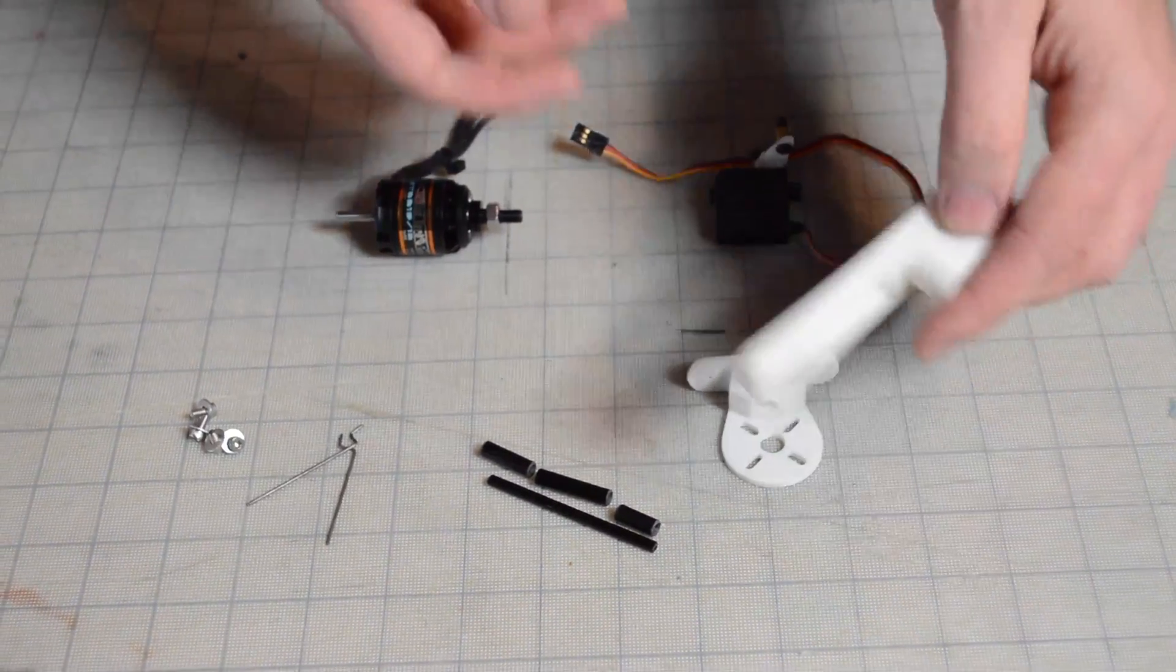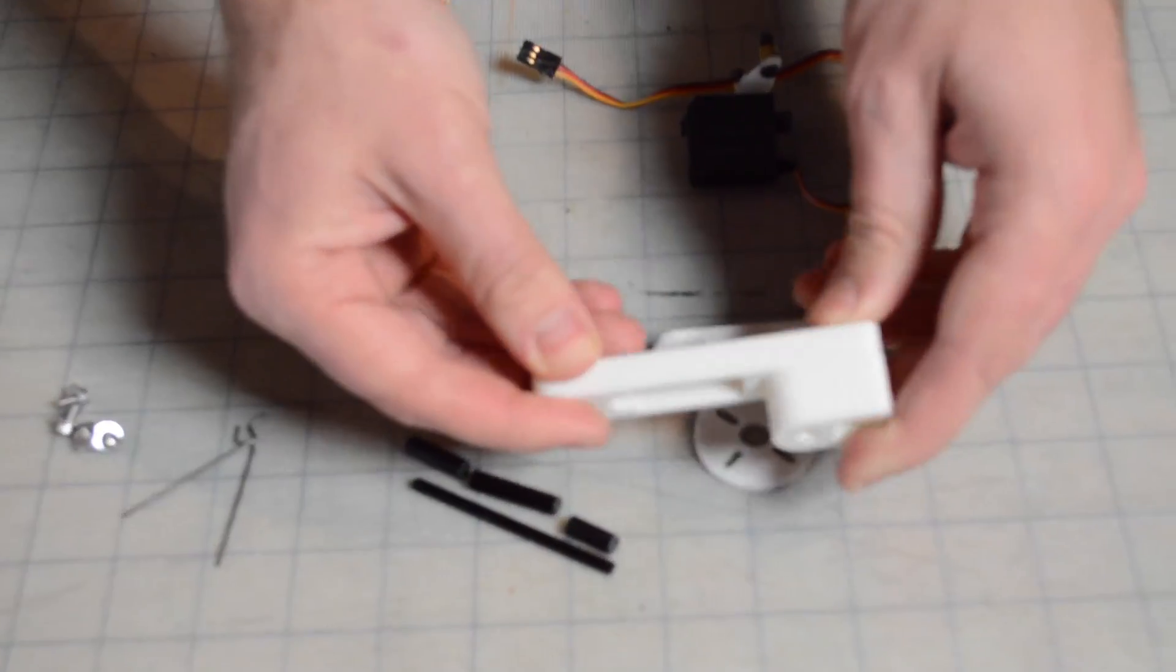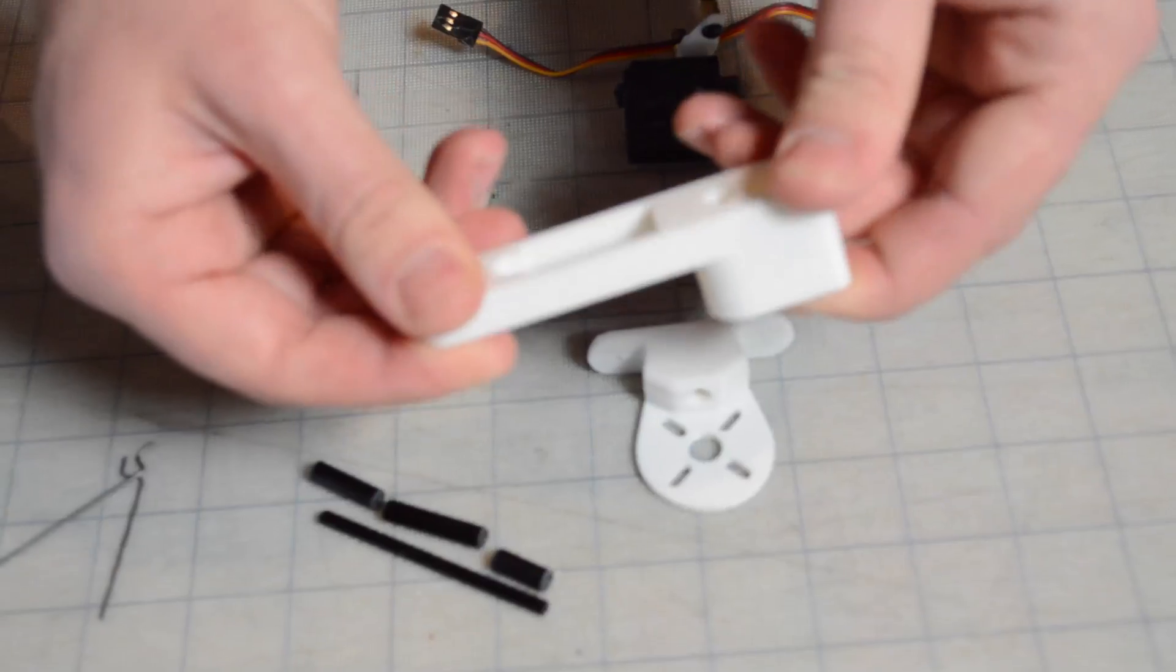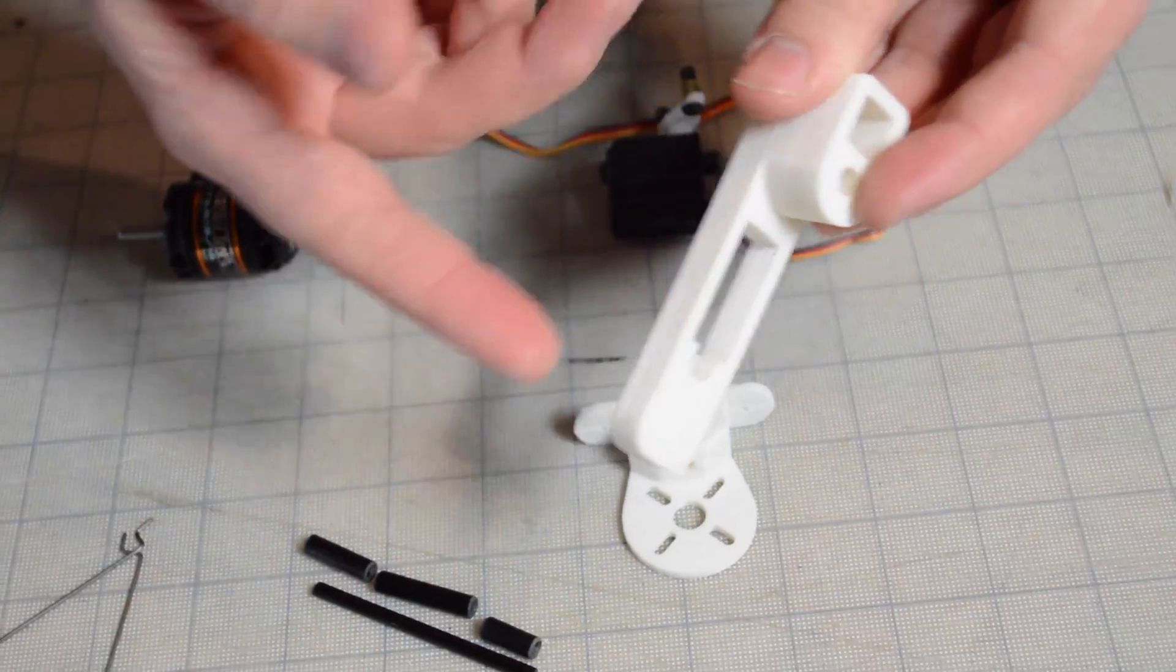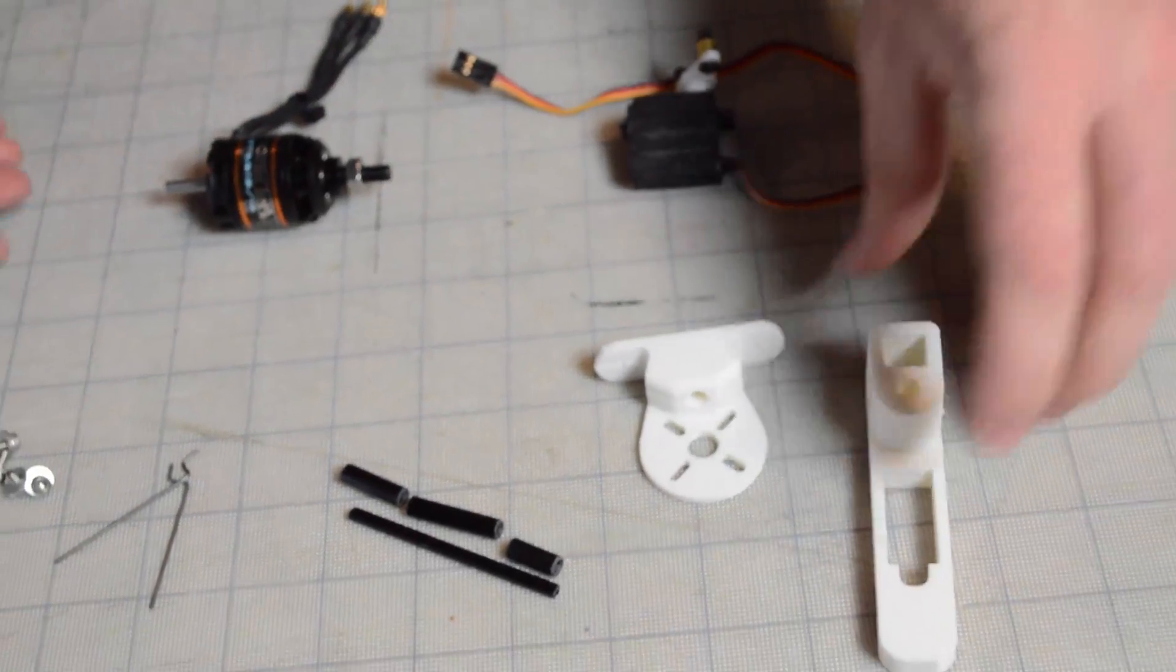Okay, so this video is just to show you how to assemble the 3D printed tilting tail assembly. You can pick this up on the store. It's sold as an upgrade or it'll be included as a standard part of all the tricopter kits from now on.